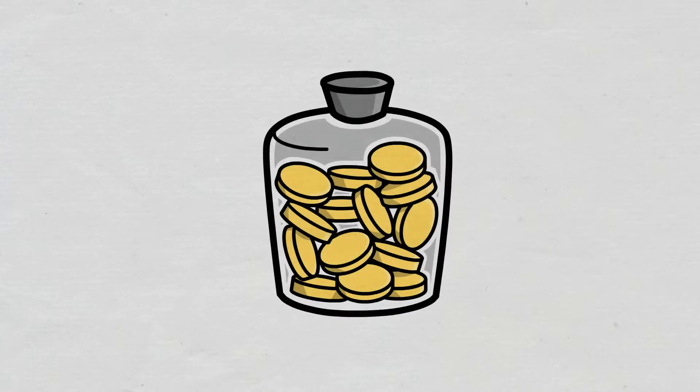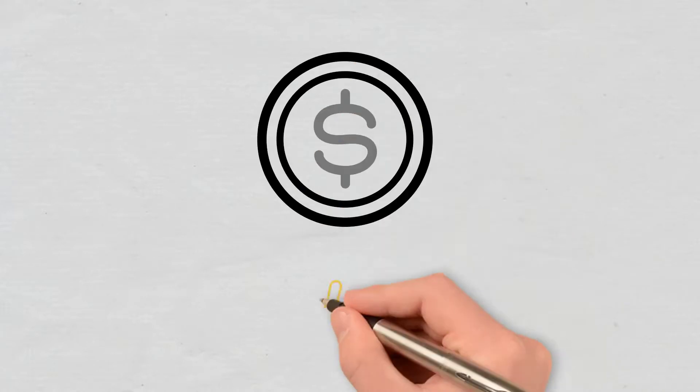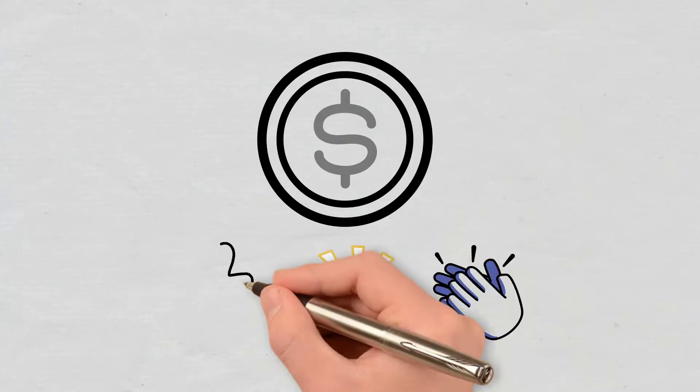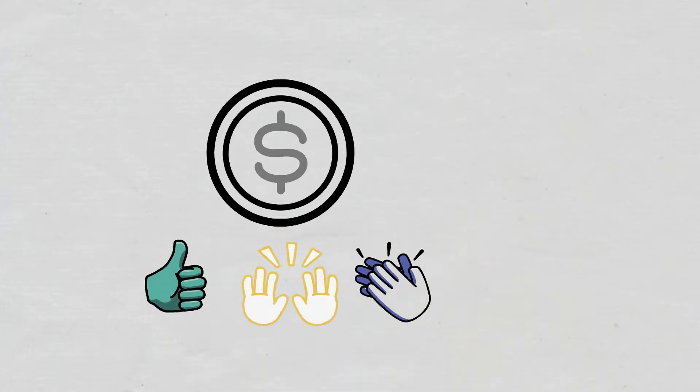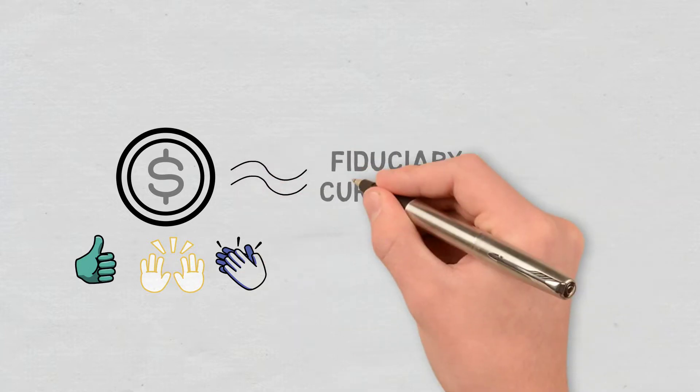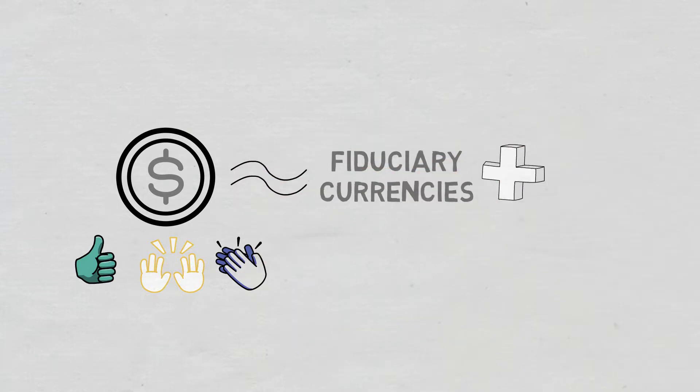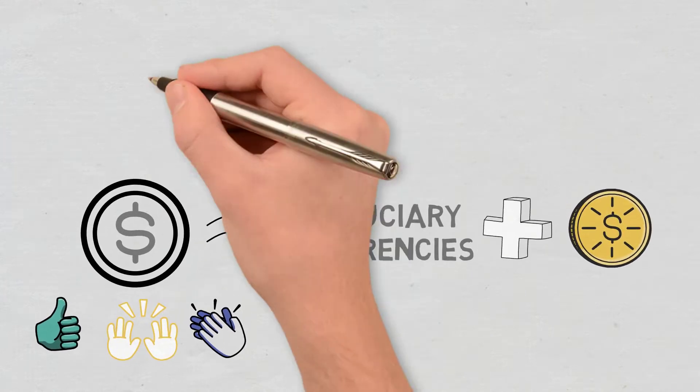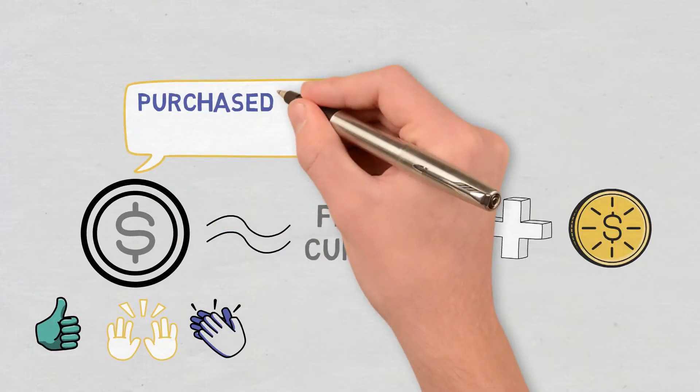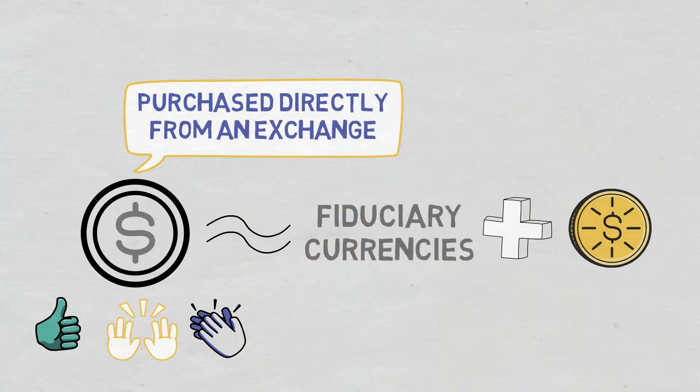Conclusions: Stablecoins can be considered a new and popular exchange currency. They can be used in the same way as fiat currencies with the added advantages of crypto assets. Plus, they can be purchased directly from an exchange. They are also backed by some values, so there should be no worries about price volatility.